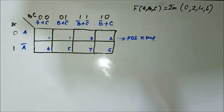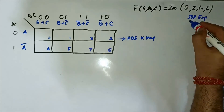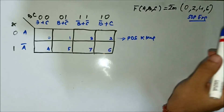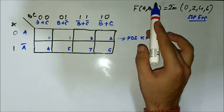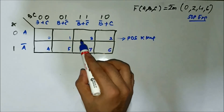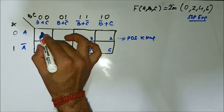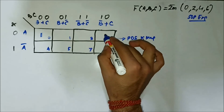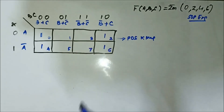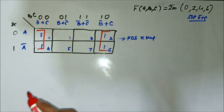This is the second question — implementation of an SOP expression using a POS K-map. Again we have a three-variable SOP expression given in terms of minterm values. The minterm values are 0, 2, 4, and 6, so we map those into the K-map.